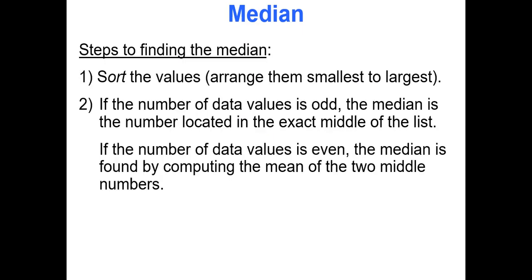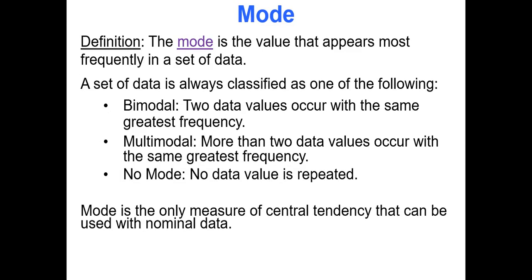To find the median by hand, sort the data. If the number of data values is odd, the median is the number right in the middle. If the number of data values is even, you'll have two middle numbers that you must average — add them up and divide by two.